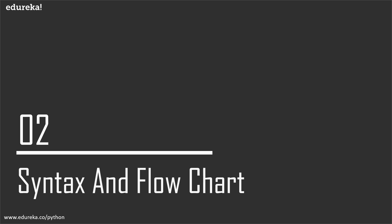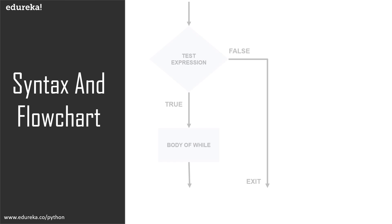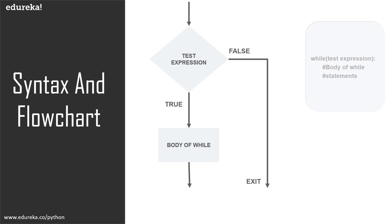Before that, let's discuss the flow of control using the flowchart. The execution starts and checks if the test expression is true or false. If it is false, it will exit the loop, and if it is true, it will go to the body of the while loop and execute the statements provided. The test expression has to be true for execution to move into the body of the while loop.